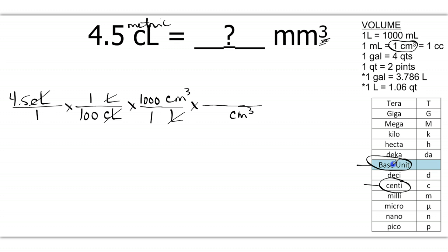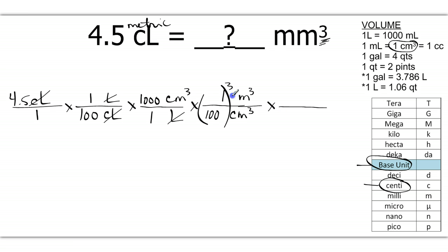You always want to go to the base unit when dealing with metric prefixes. So from centimeter, we want to go to meter — or since it's centimeters cubed, we're going to go to meters cubed. You use the same type of conversion factor you normally would. The base is larger, so meter gets the 1. From the base to centi it's 10, 100, so 1 meter equals 100 centimeters. Because both units are cubed, you're also going to cube your numbers: 1 cubed is just 1, and in the denominator it's 100 cubed. Centimeters cubed cancel, I bring down meters cubed, and now I want to get to millimeters cubed.